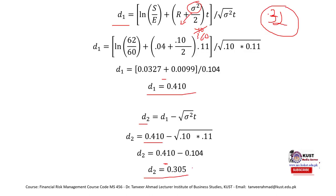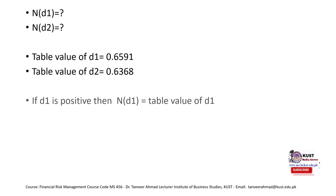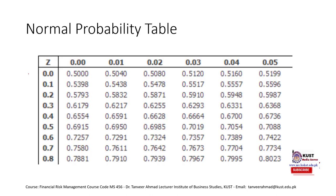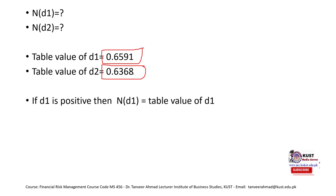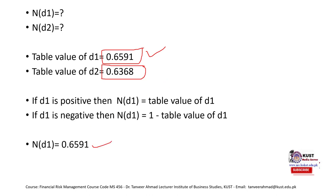We need to find the tabulated values of d1 and d2. The values to look up are 0.41 and 0.305. The tabulated value for d1 (0.410) is 0.6591, and the tabulated value for d2 (0.305) is 0.6368. Since d1 is positive, N(d1) is taken as the table value directly, giving N(d1) = 0.6591 and N(d2) = 0.6368. There is a table available in the shared folder — the same table that has been pasted in the PowerPoint slide.